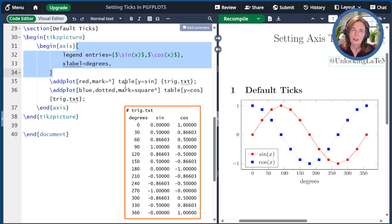I've also added a legend and x label in the axis options. The ticks that PGF plots picks by default are very reasonable. On the y-axis, it picks minus 1, 0, and 1. And on the x-axis, it goes from 0 to 350 in intervals of 50. This is pretty good with no hints from me.